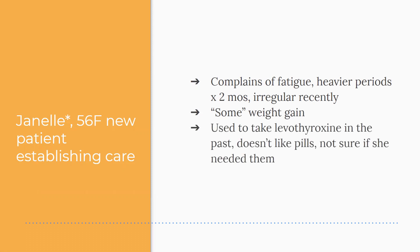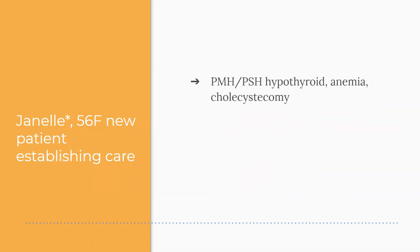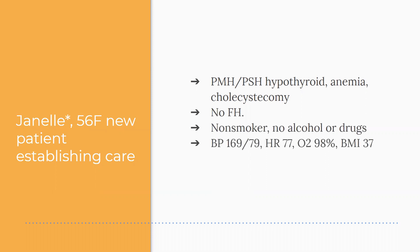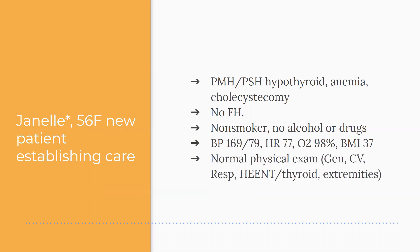She used to take levothyroxine in the past — she doesn't like taking pills and wasn't sure if she needed them. Past medical history includes hypothyroidism, anemia, cholecystectomy, and obesity. No family history, non-smoker, no alcohol or drug use. At this visit: blood pressure 169/79, heart rate 77, oxygen 98%, BMI 37. Physical exam is normal — general cardiovascular, respiratory, HEENT including thyroid and extremity exam.